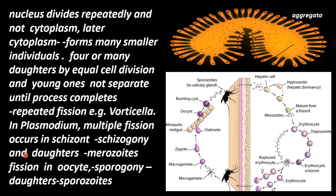Multiple fission occurs in the schizont. The mature schizont in the liver cell undergoes a process called schizogony. This process is called schizogony, and the daughter cells produced are called merozoites.